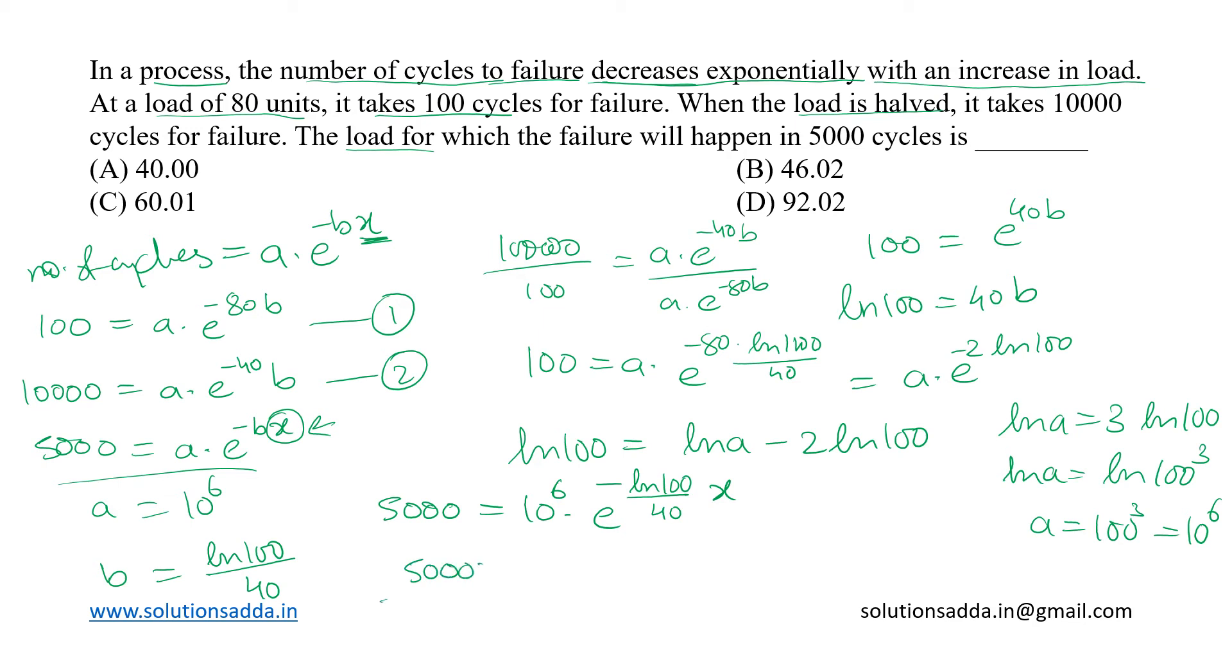So this will become 5000 upon 10 to the power 6 equal to e raised to minus ln 100 upon 40 x. Let us take ln on both sides.